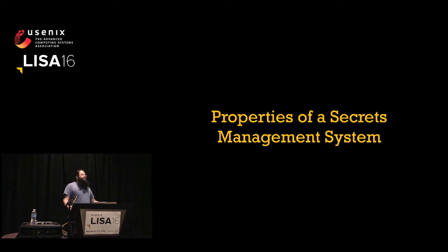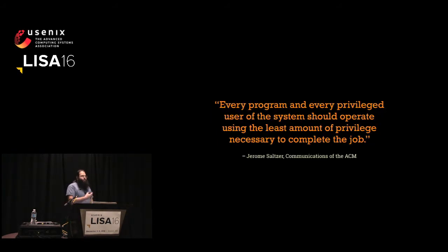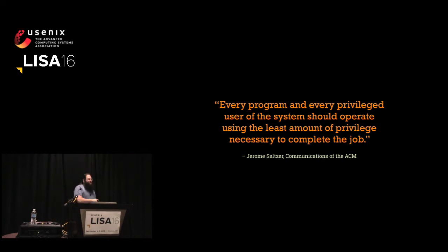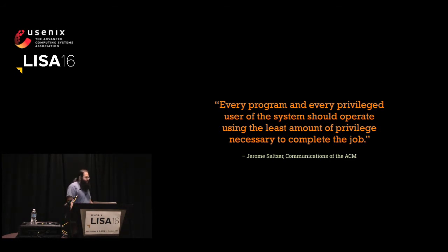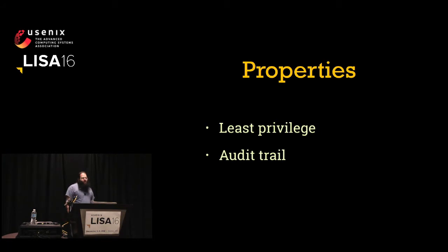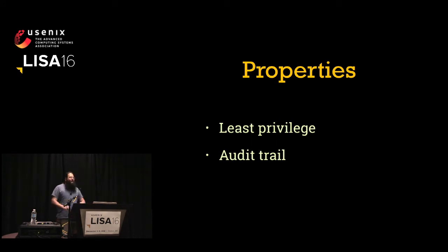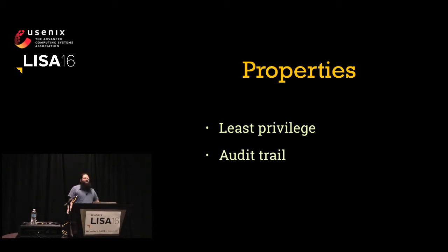Let's talk about properties of secrets management systems. The principle of least access or principle of least privilege is generally attributed to Jerry Salter in a 1974 ACM paper. In short, a service or tool should have only access to the secrets it needs and nothing else. Every secrets management tool should be judged on two main properties: how well can we implement principle of least privilege, and how much audit information is there so that when things go wrong, you know what was accessed, when, where, and why.